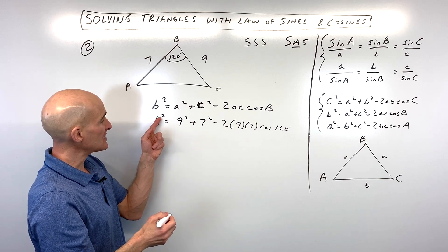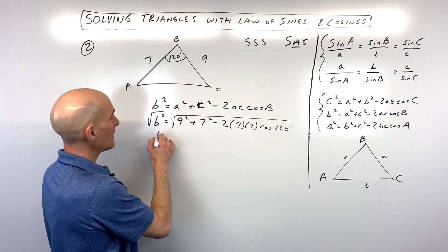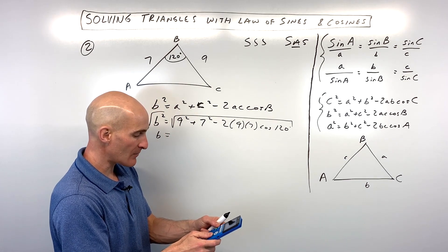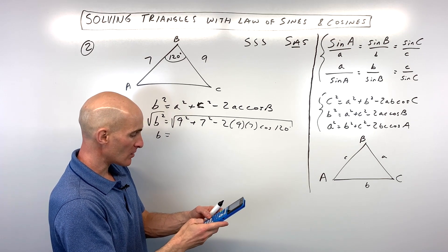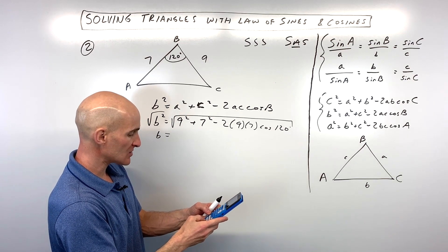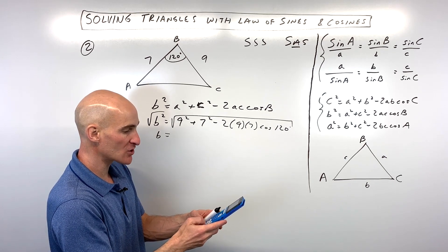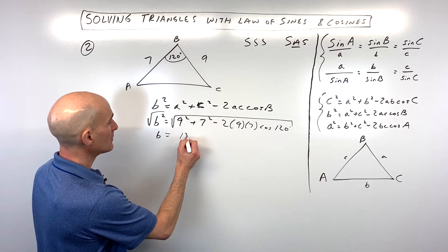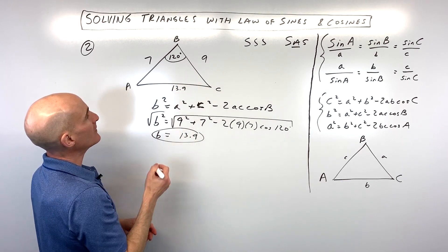Now, to solve for B, see how this is B squared? We can take the square root of both sides, and that'll be what B is. Now, check my work on this. We're going to do this all, I'm going to do it all in one step on the calculator. So, we're going to take the square root of the quantity 9 squared plus 7 squared minus 2 times 9 times 7 times the cosine of 120. And again, make sure you're in degrees. I'm getting about 13.9 for side B here. So, let's go ahead and put that in.